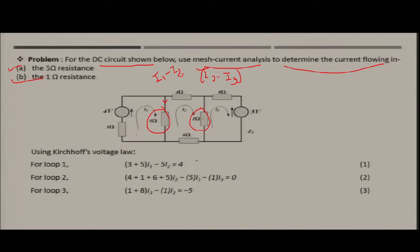For loop 1: i1 flows through the 3-ohm and 5-ohm resistors, giving (3 + 5)·i1, minus 5·i2 equals 4 volts. For loop 2: i2 flows through the 4-ohm, 1-ohm, 6-ohm, and 5-ohm resistors — the total is (4 + 1 + 6 + 5)·i2, minus 5·i1, minus 1·i3 equals zero. Similarly, KVL in the third loop gives a third equation in i1, i2, and i3.